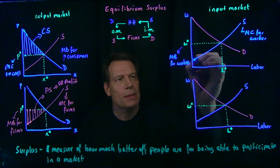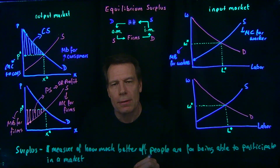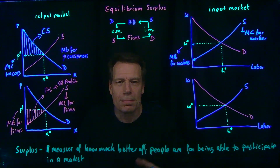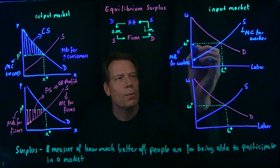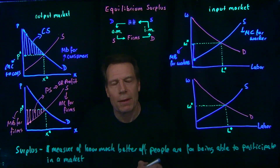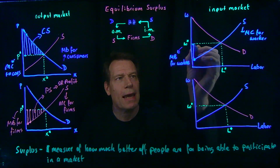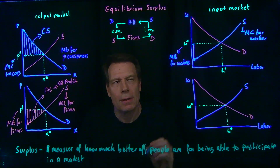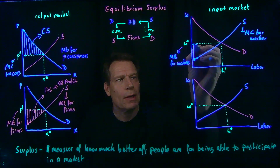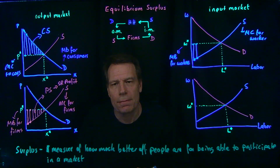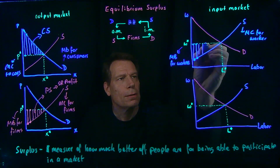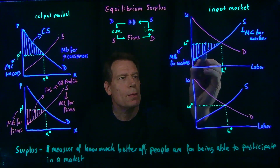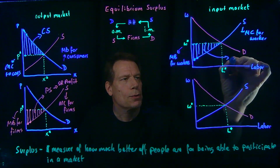There's some worker who's willing to work for this amount, but that worker gets to be paid the market wage. So that worker is better off by that distance — they would have been willing to work for this amount but got to collect the market wage. Another worker is willing to work for this amount but gets to collect the market wage, so they're better off by this distance. And so on for all the workers. When we sum all of that, we get a measure of worker surplus in this market.